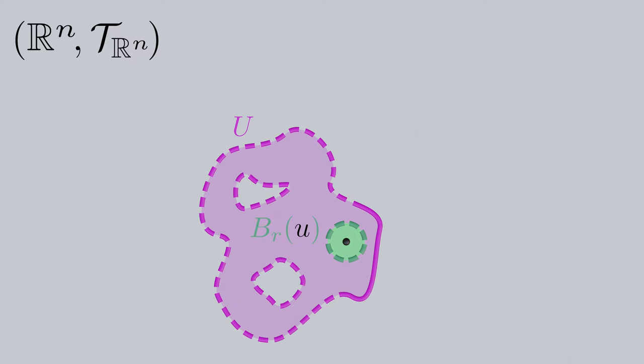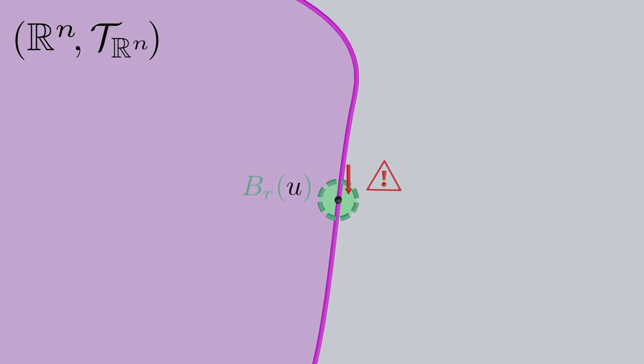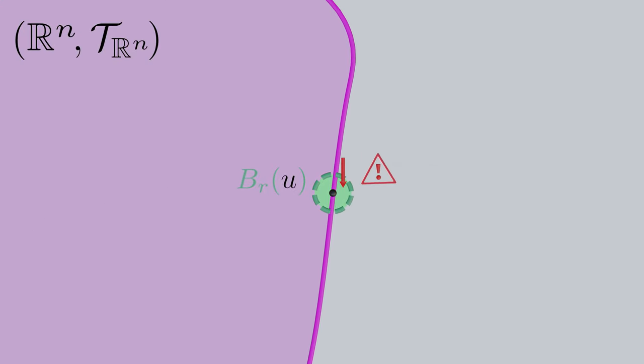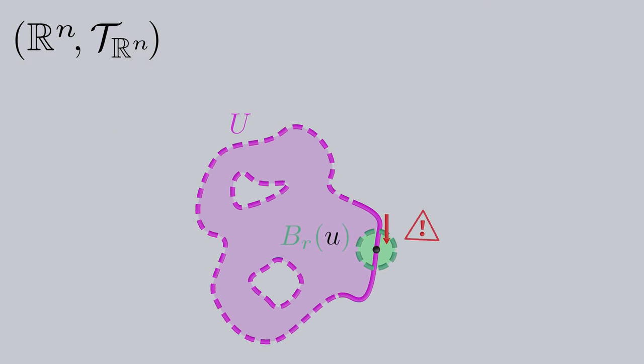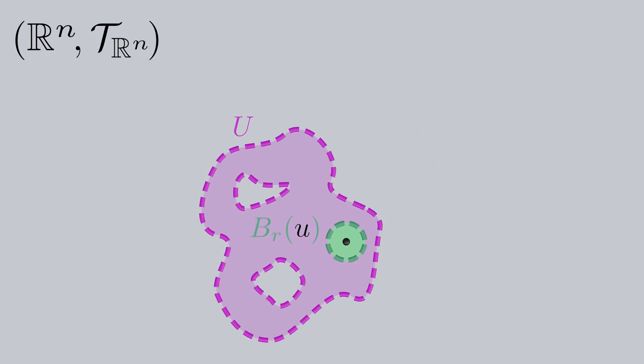So what if we included a solid line at one of the edges of subset U? Would U still be open? As you can see, if we form a ball around one of these points, no matter the size of the ball, it will always contain an element outside of the set. So that's why we exclude these points from open sets. Technically speaking, these are limit points that we're excluding.